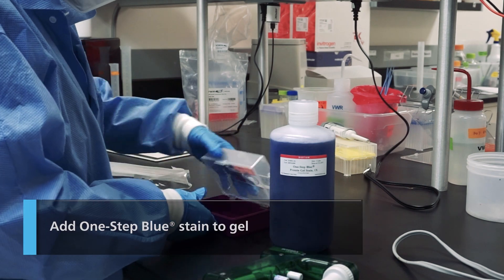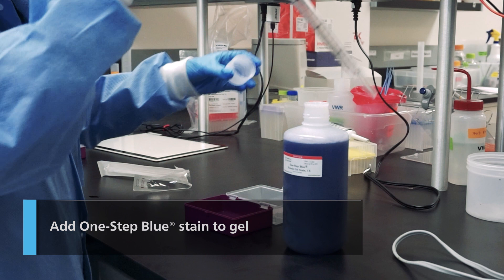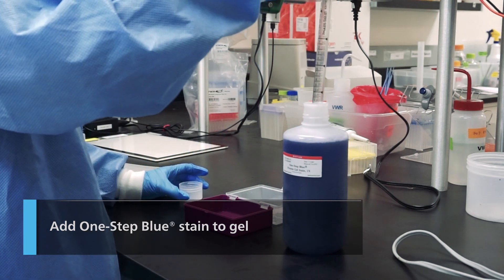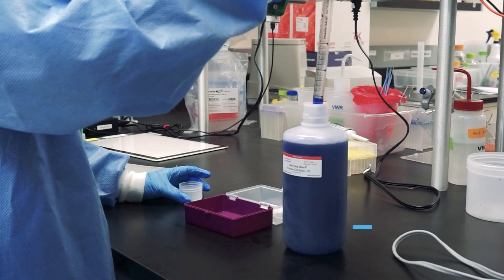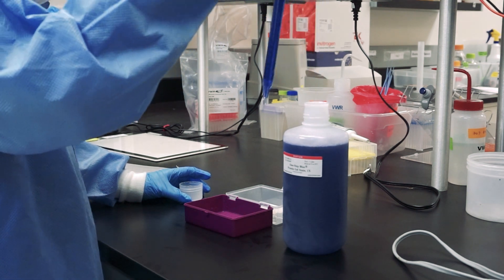Next, add the undiluted One Step Blue solution to your SDS-PAGE gel after electrophoresis. We recommend 25 milliliters per 8x8 cm gel. The staining solution may be reused up to 4 times.